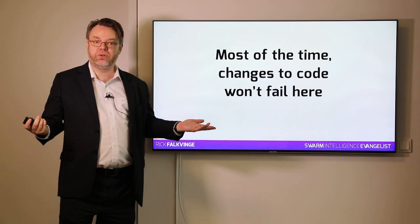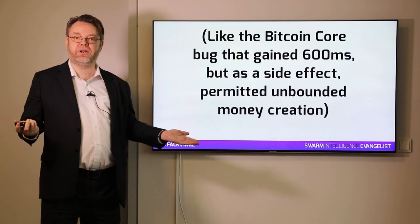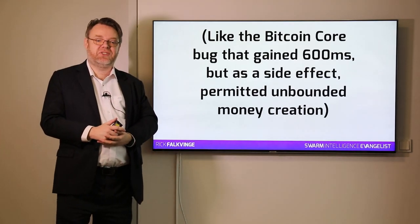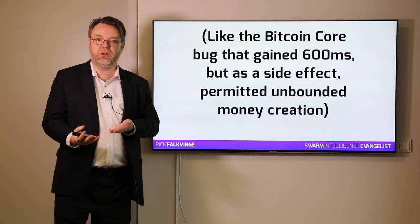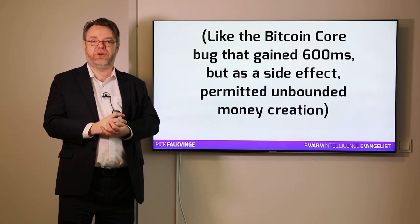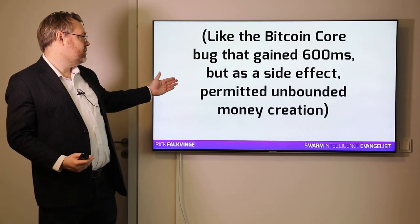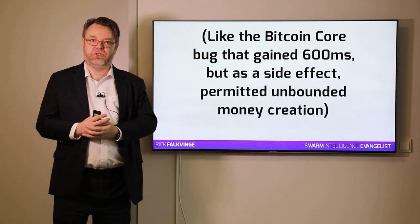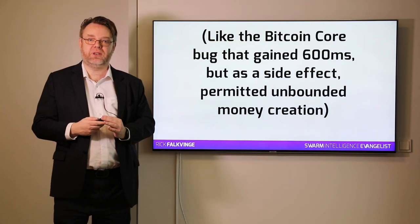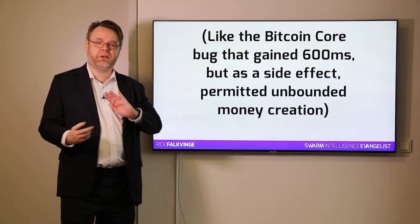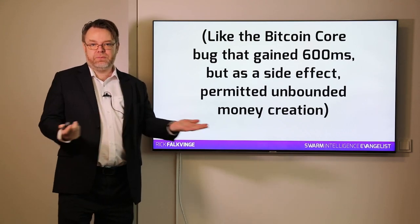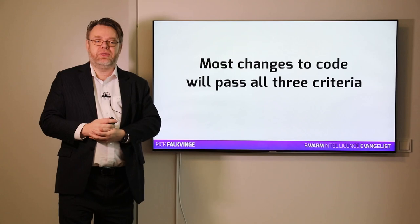There are exceptions, of course, notably when security bugs are introduced, like the bug in Bitcoin Core where there was an optimization that gained 600 milliseconds in validation of a block. But as a price for these 600 milliseconds saved every 10 minutes, it introduced unbounded money creation by miners, which is obviously unacceptable. This was a pretty big deal back in, I think, maybe six months ago. Anyway, this is an example of when the fix is not proportionate. But most changes of code will frankly pass all these three criteria.